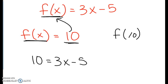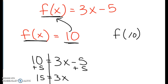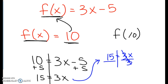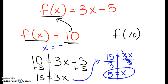With a multi-step equation, we solve for x. First we add 5, so we get 15 equals 3x. Then we divide by 3, and we get x equals 5. So our input value is 5 for this function when we're given the output value of 10.